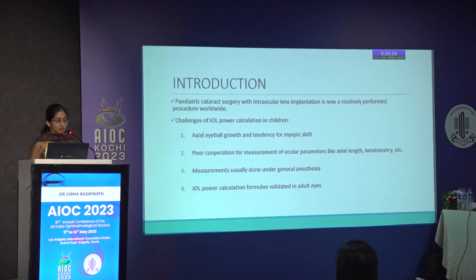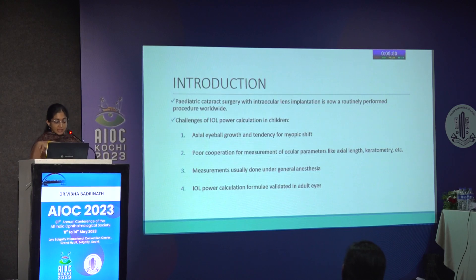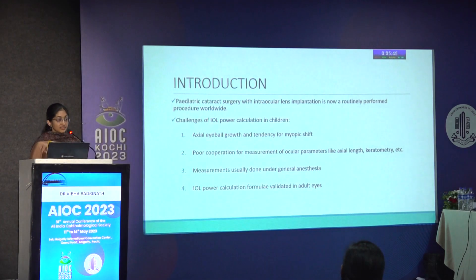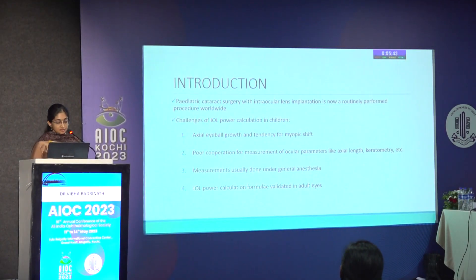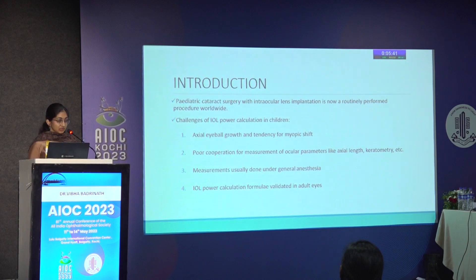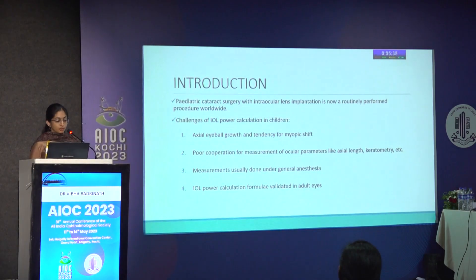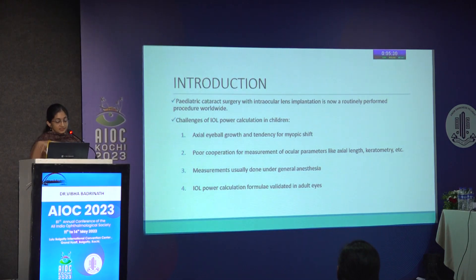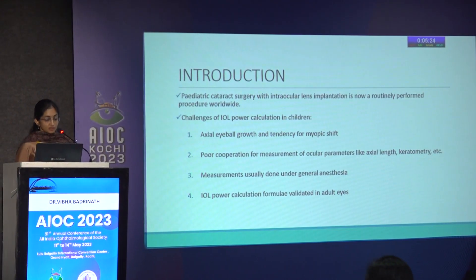Pediatric cataract surgery with intraocular lens implantation is a very commonly performed procedure worldwide. But in children there are some challenges in IOL power calculation. Children have axial eyeball growth and a tendency for myopic shift, because of which we need a targeted hyperopic under-correction. Also, children have poor cooperation for measurement of ocular parameters, so measurements must be done under general anesthesia where centration and fixation is usually a problem. The IOL power calculation formulae normally used are all validated in adult eyes.